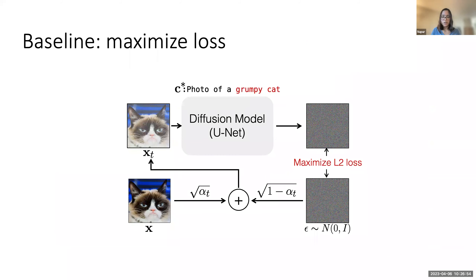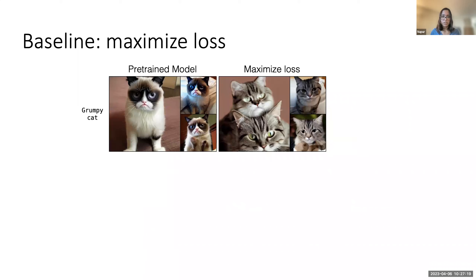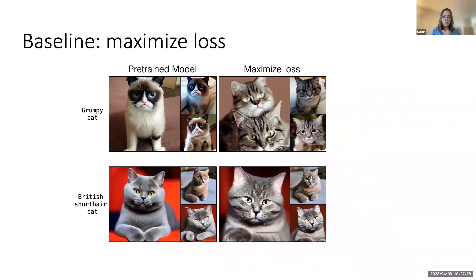One baseline for removing something is to simply maximize the training loss for those particular training images — maximizing the mean square error between the predicted noise and original ground truth noise. But if we look at the results for this baseline for the grumpy cat image, it seems to be able to remove these images and generates random cat images. However, for a nearby concept like British shorthair cat, it is changing the concept a lot, and this is probably not what we want from a concept ablation method.